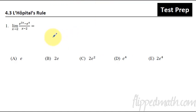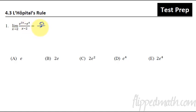We're going to see if we can just plug in the number two. Remember, with limits you always try direct substitution first. If you do that, you're going to get e to the fourth on top minus e to the fourth — you get zero. Two minus two is zero. So once we see that we've got zero over zero, now we can go ahead and use L'Hôpital's rule.